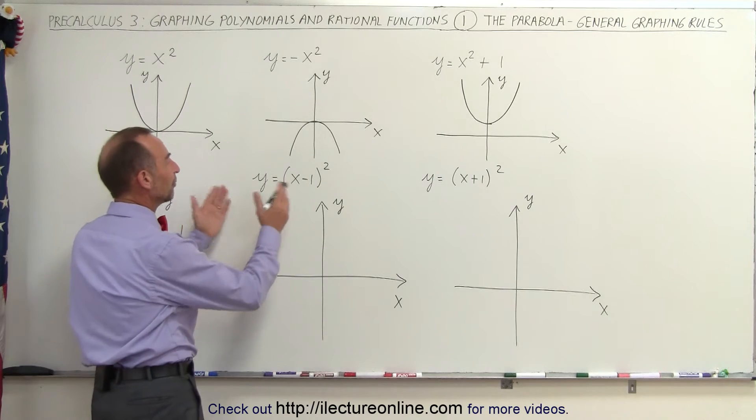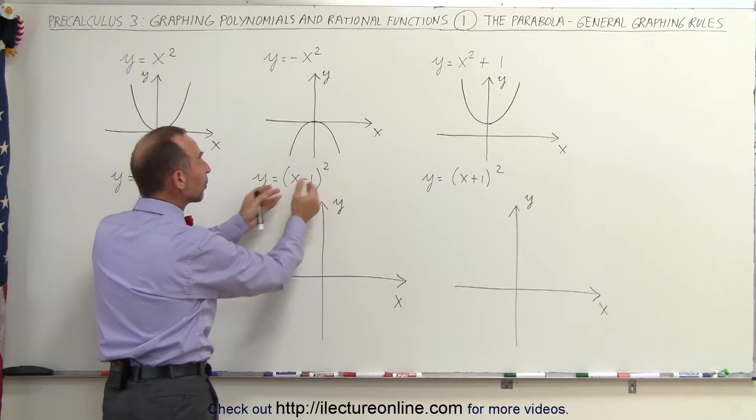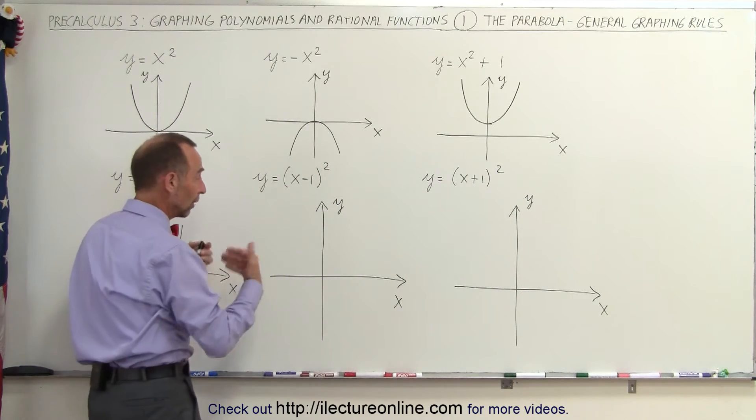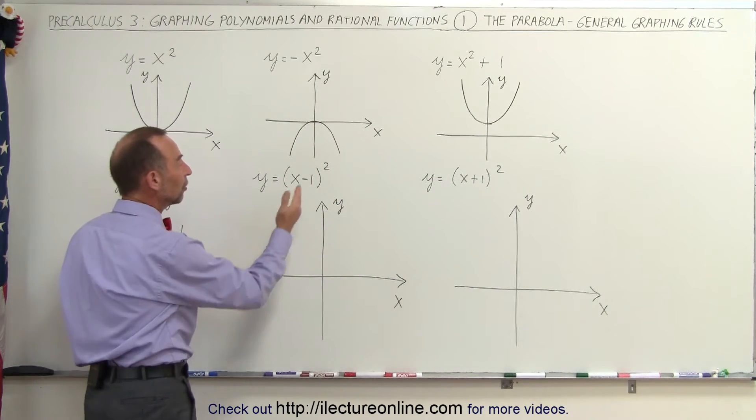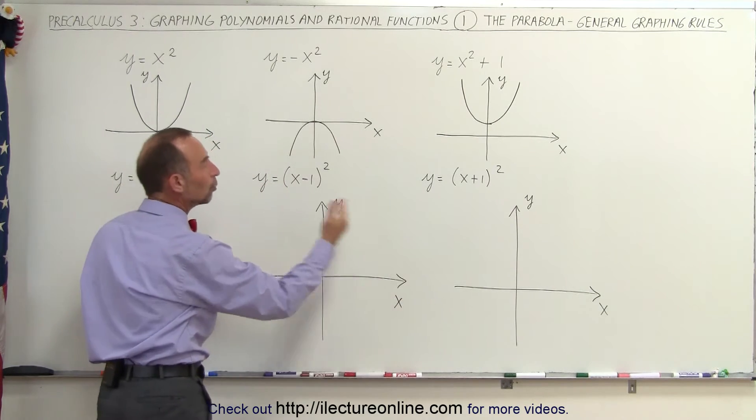Now if we have a function like this, where we have plus or minus a constant inside parentheses, and the whole thing is squared like this, this is still a parabola. If we graph it, it looks like a parabola, but this will cause the graph to either move to the right or move to the left.